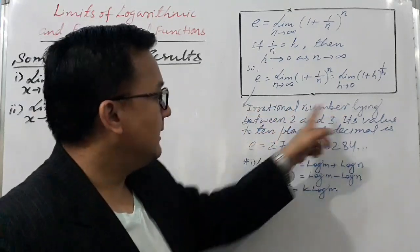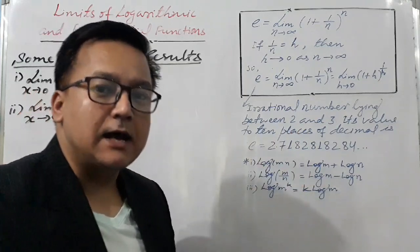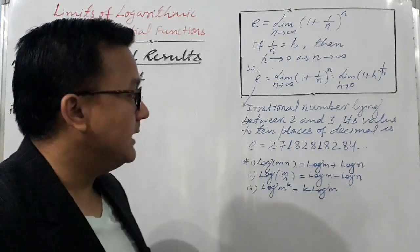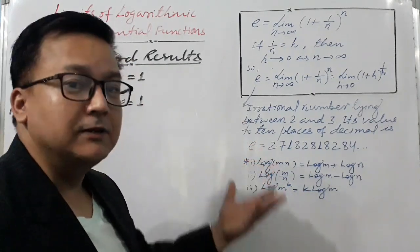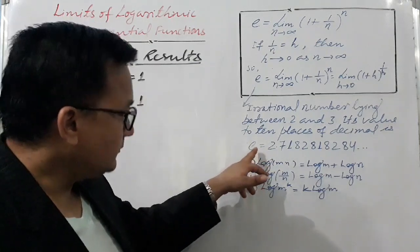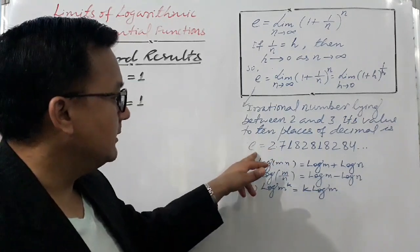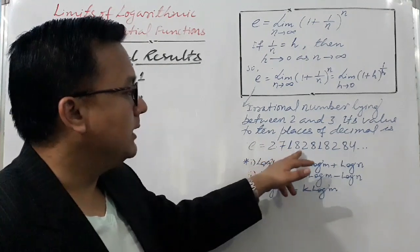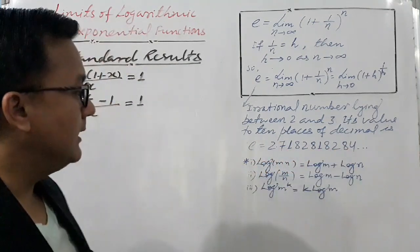e is an irrational number lying between 2 and 3. To 10 places of decimal, e is equal to 2.7182818284 and so on. Since it's irrational, we can't write down all decimal places of e.